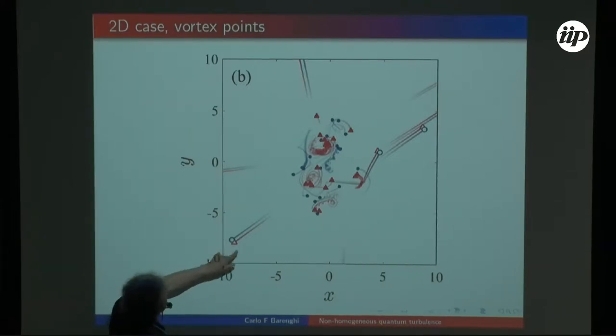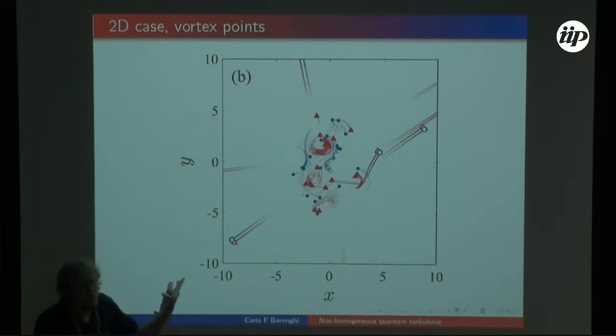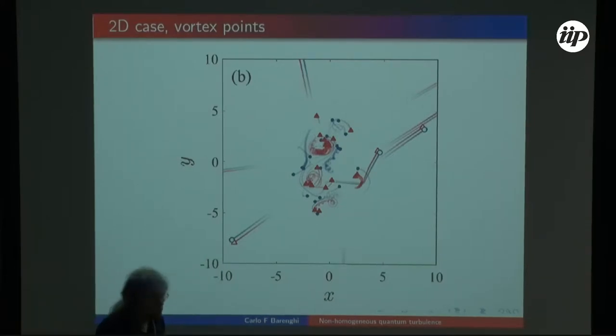We have labeled with empty symbols, blue and red, these pairs which can be identified algorithmically. When a vortex pair escapes, it removes energy, momentum, angular momentum. It removes number of vortices, dimensional length, from the original vortex configuration.